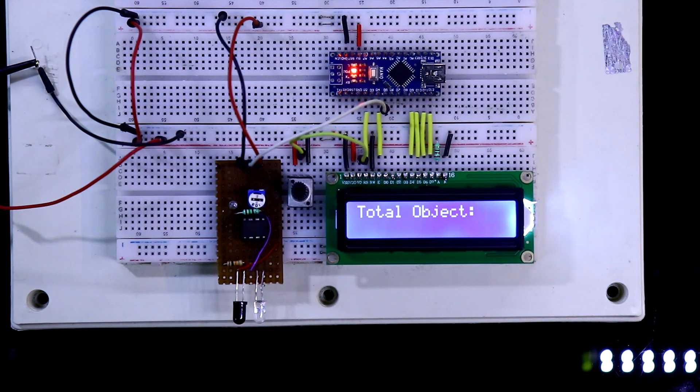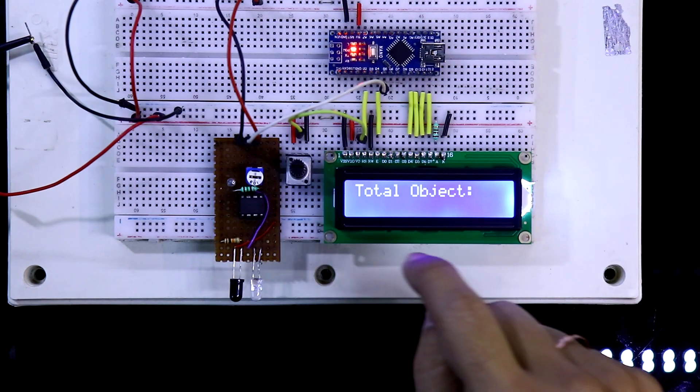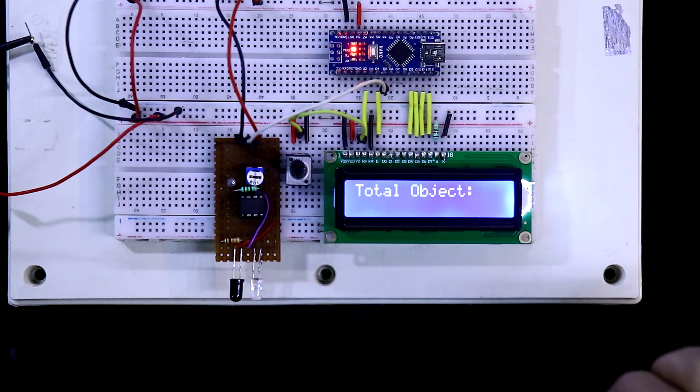Now it is showing total object. Till now, no object is detected, so in the second row, nothing is showing.